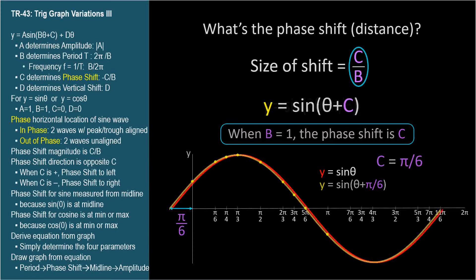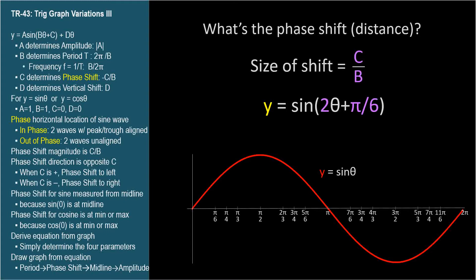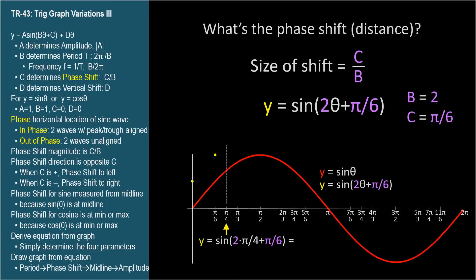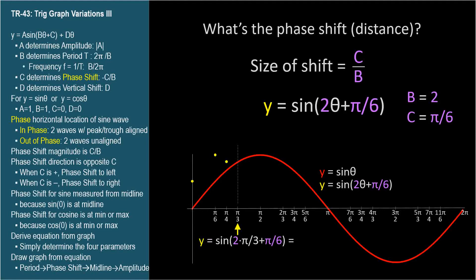Now let's change the b parameter to two: y equals sine two-theta plus pi over six. So b equals two and c equals pi over six. Starting at theta equals zero: sine of two times zero plus pi over six is sine pi over six, which is one half. When theta equals pi over six, sine of two pi over six plus pi over six is sine pi over two, which is one. When theta equals pi over four, sine of two pi over four plus pi over six is sine two pi over three, which is square root of three over two. When theta equals pi over three, sine of two pi over three plus pi over six is sine 5 pi over six, which is one half. Continuing in this fashion, we plot these points and draw the wave.